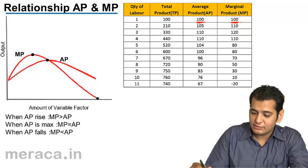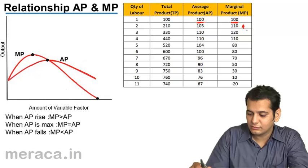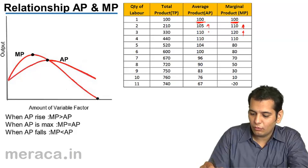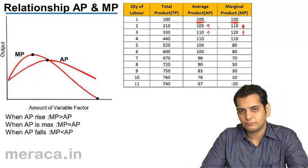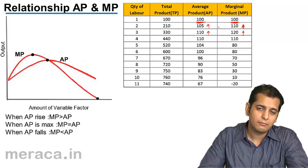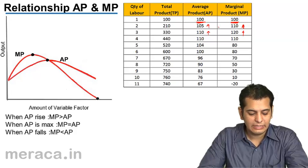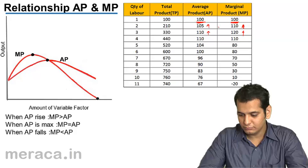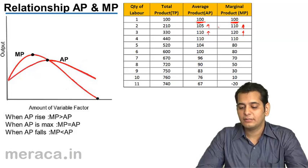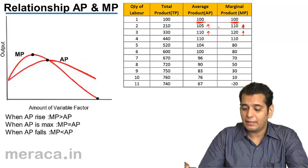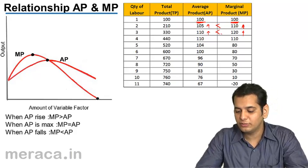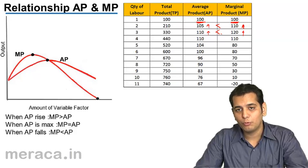Now, as MP rises, AP also rises. Though AP does not rise in proportion of MP, we can see that when MP is rising, AP is also rising. But when this situation is existing, that is when MP is rising, we can see that MP is more than AP. At both these levels, MP is more than AP.